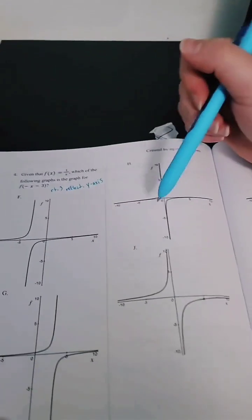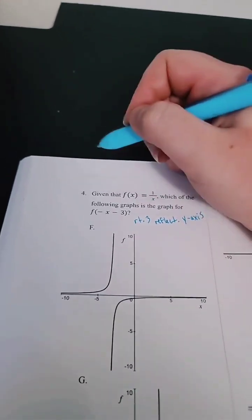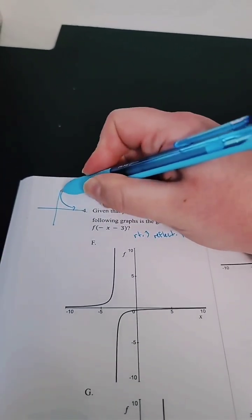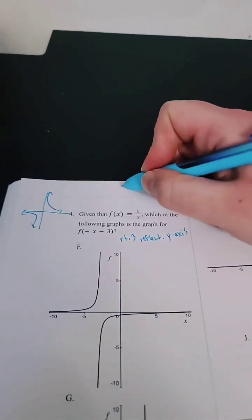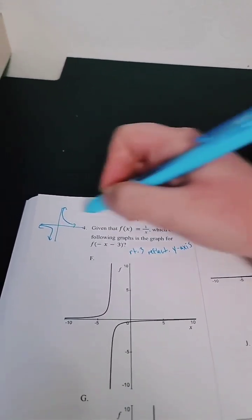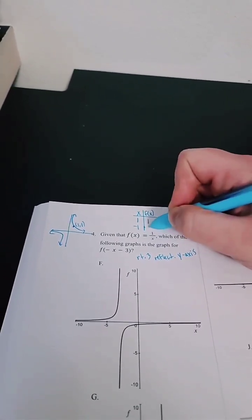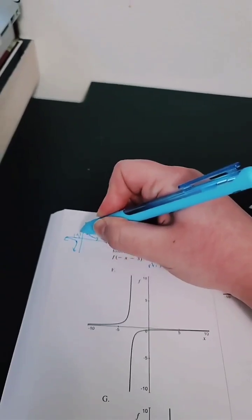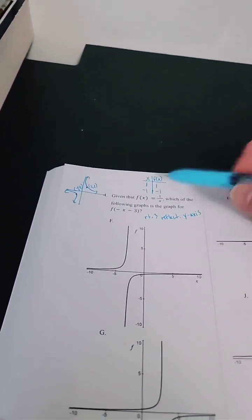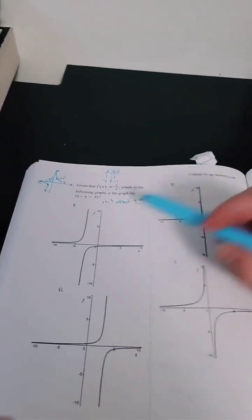If you don't remember your transformation stuff, you could literally just plug in points. For the parent function f(x) = 1/x, if x is 1 then f(x) equals 1, so you have the point (1, 1). If x is negative one, then f(x) is negative one, giving you the point (-1, -1). Then you can ask what happens if you go to the right by three and then reflect across the y-axis.